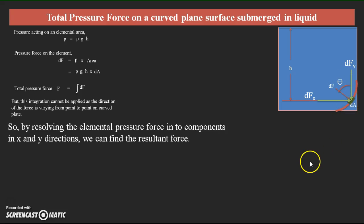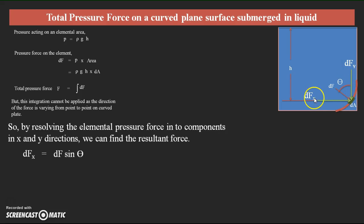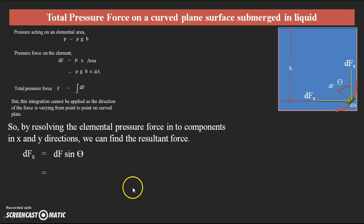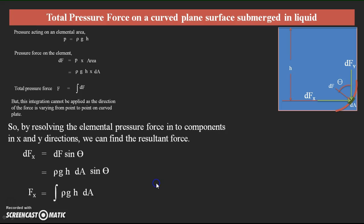By assuming theta as the angle between df and dfy, we write dfx as the horizontal component: dfx = df·sinθ. Since dfy is adjacent and dfx is the opposite component, dfx = df·sinθ. Substituting df = ρgh·dA, we get dfx = ρgh·dA·sinθ. Therefore, Fx = ∫ρgh·dA·sinθ. This h·dA·sinθ is further modified by considering the projected area of the curved surface.